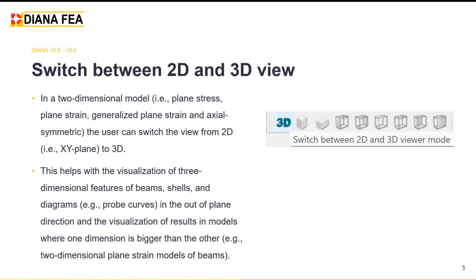We've also improved the user experience. Here we discuss the possibility to switch between a 2D view on a 2D model and a 3D view. When a user is working on a two-dimensional model — such as plane stress, plane strain, generalized plane strain, or axisymmetric — the user usually sees just the XY front view. But now from Diana 10.6 the user can switch with just one click to an isometric 3D view. This is very helpful for understanding 3D features such as the geometry of beams, shells, and infinite shells.